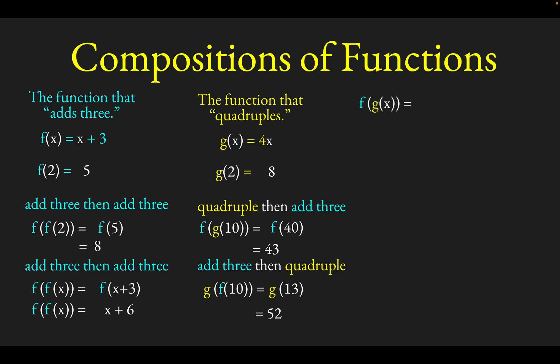We might think of f of g of some arbitrary x. What's happening here is we quadruple first because g is the function that quadruples, and then we add 3. If we quadruple x, we get 4x. Then we apply f, the function that adds 3, to 4x and get 4x plus 3.